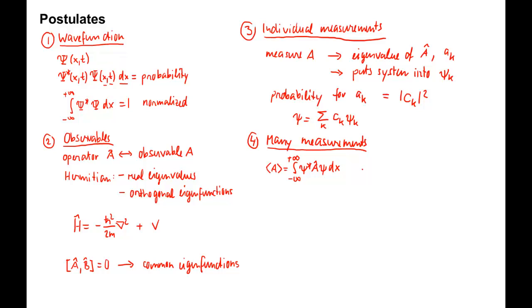For the superposition wave function written above, this reduces to a weighted average. So bracket A equals to the sum of all k of the norm of the expansion coefficients squared times ak.